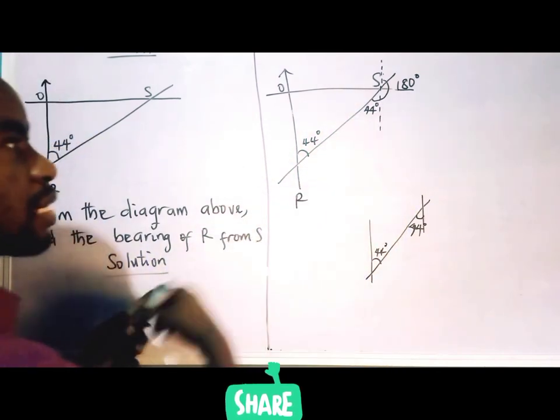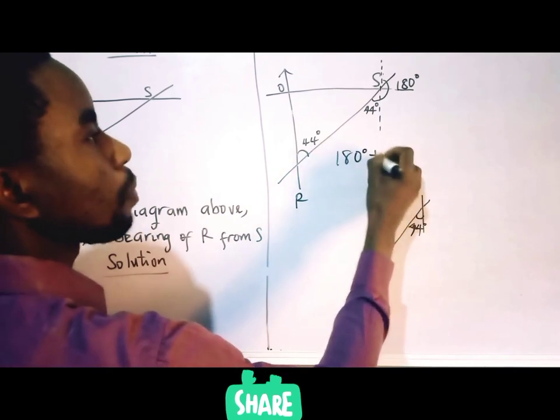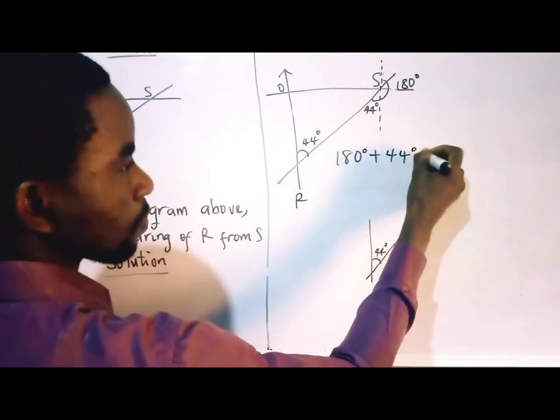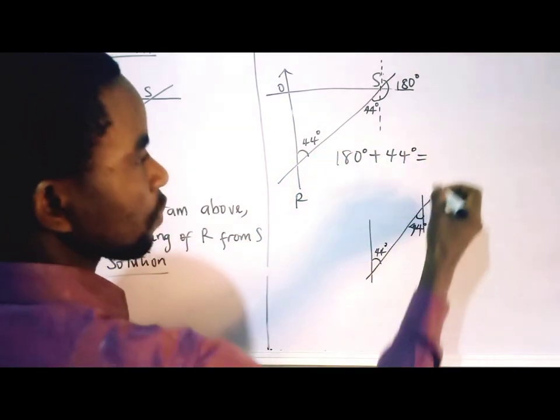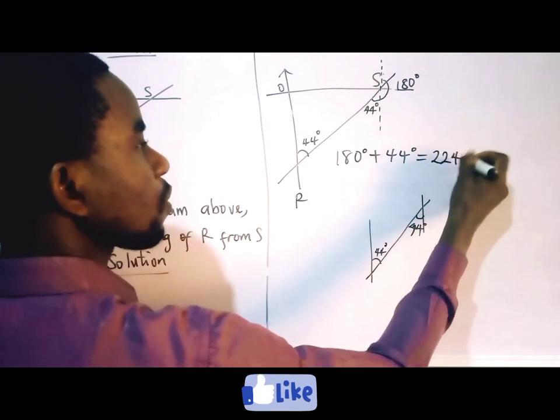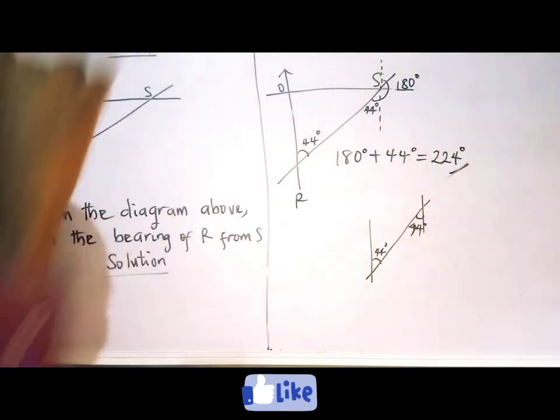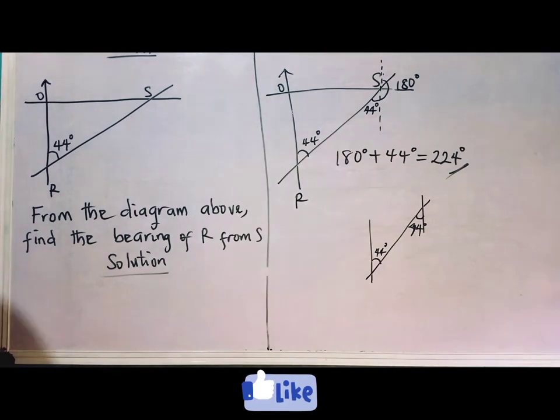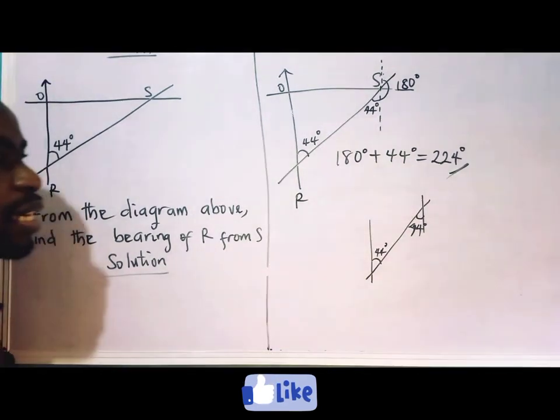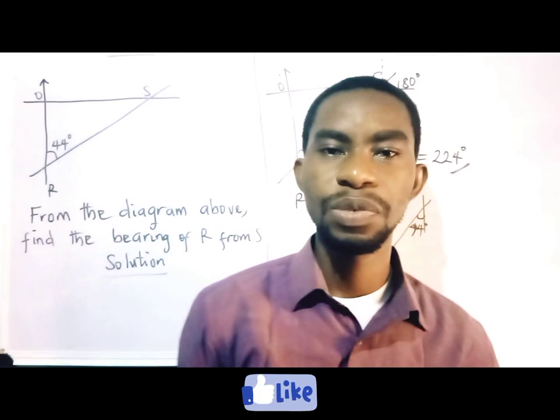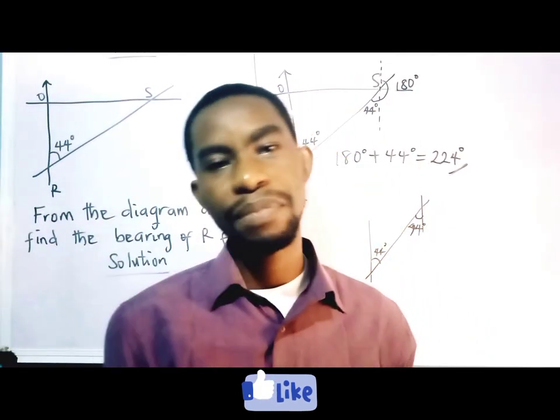180 degrees plus 44, and that would give us 224 degrees. This is the final solution to the question. So the bearing of R from S is 224 degrees. Till we meet again, this is Fun Math, and bye bye.